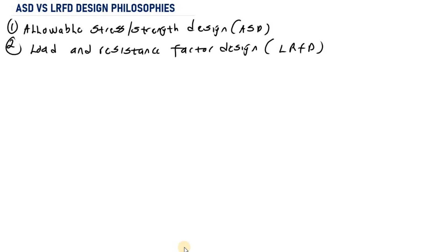In this video, I'm going to explain in depth the difference between Allowable Strength Design and Load and Resistance Factor Design. First of all, you need to know that the primary goal of a structural designer is to size members and components of a system in order to safely resist loads.